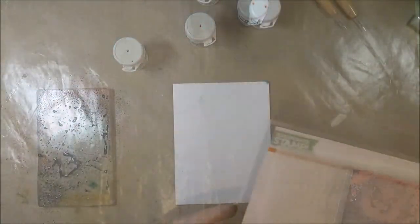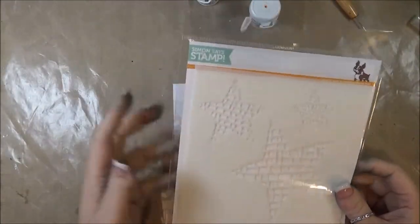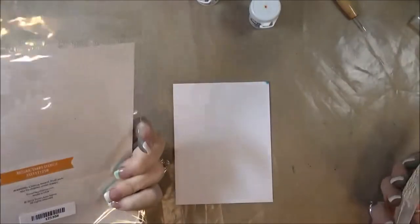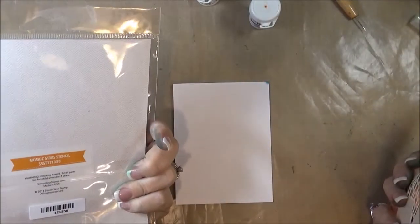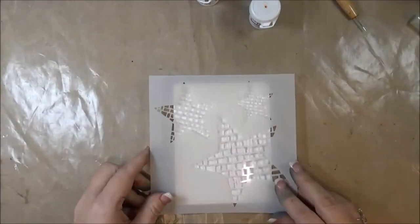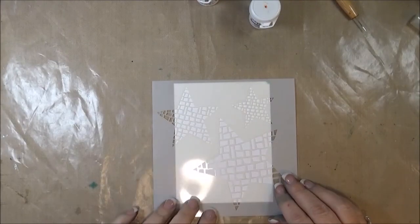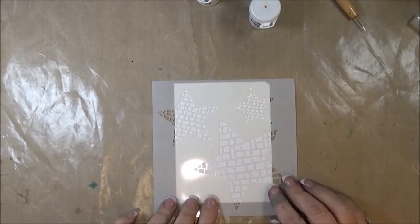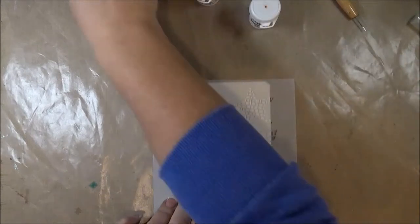And the other technique is using a stencil. This one's from Simon Says Stamps. It is called Mosaic Stars Stencil. Just laying it on the front of a card base. And let's see.